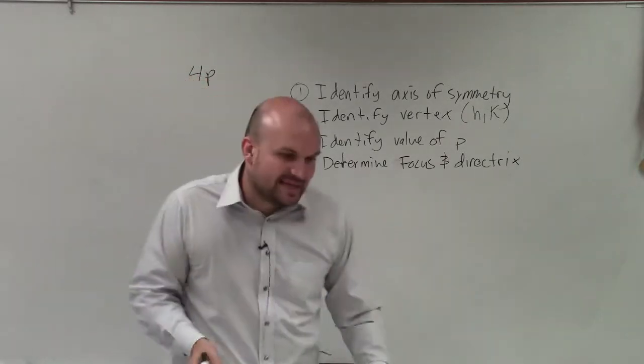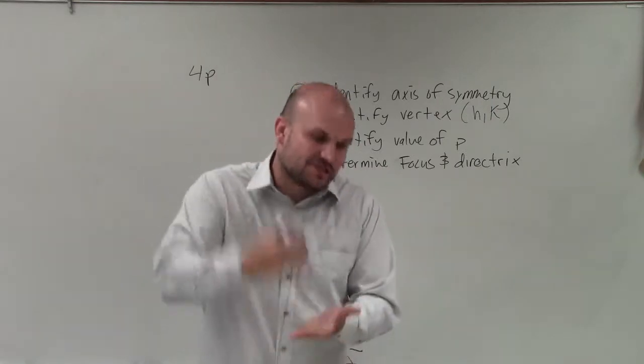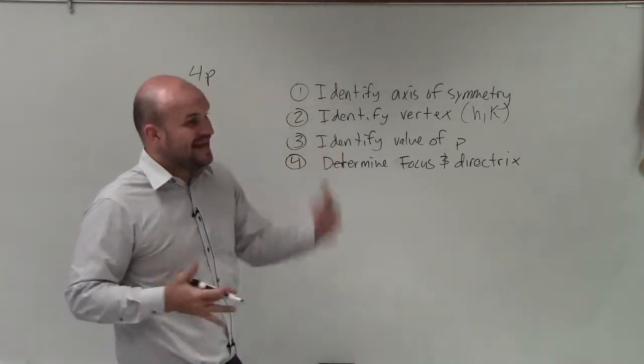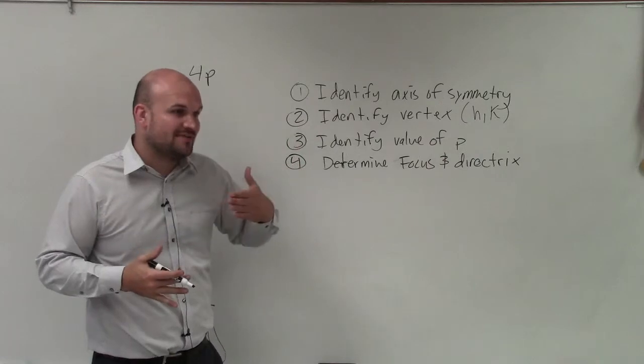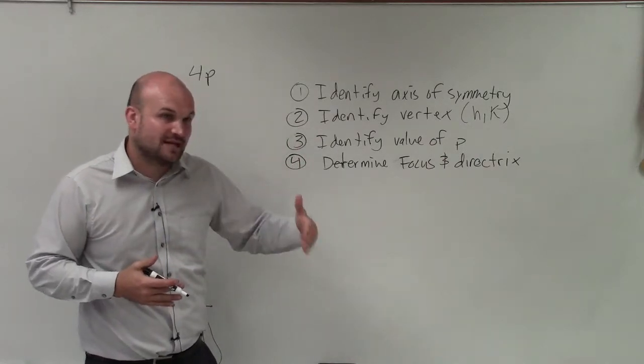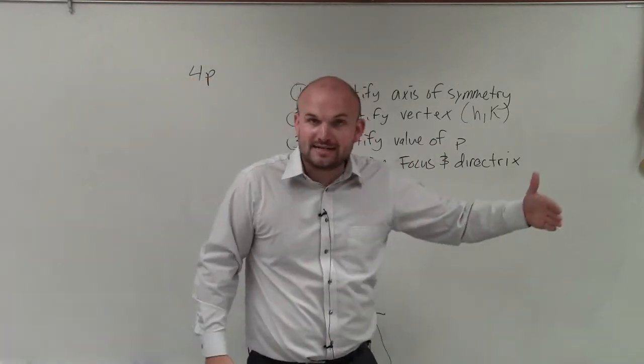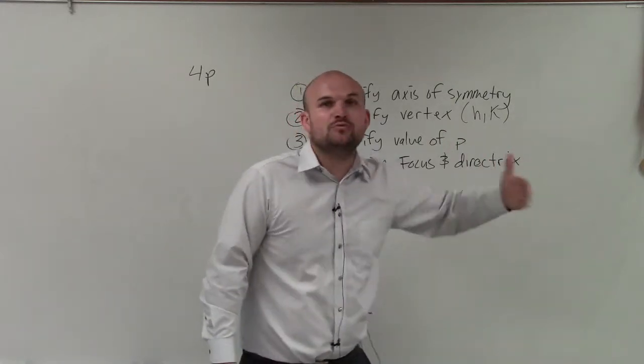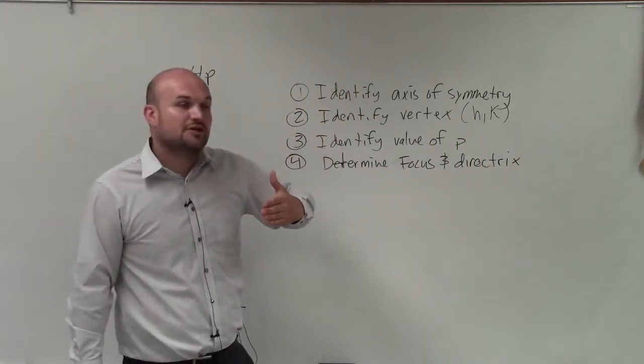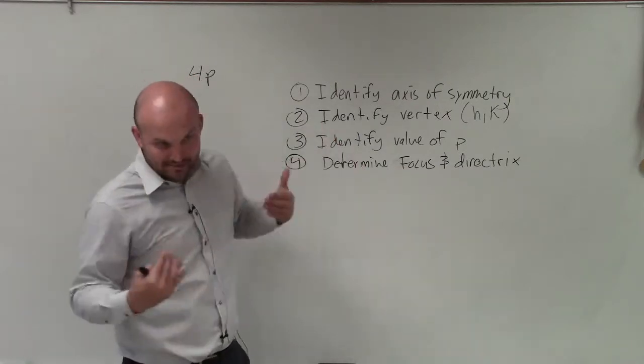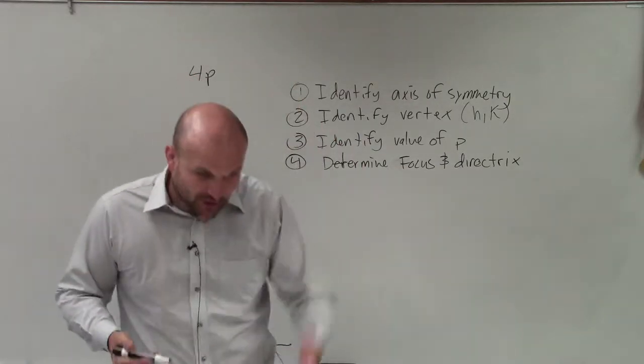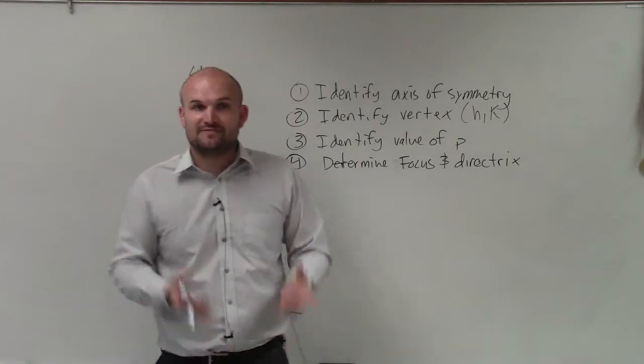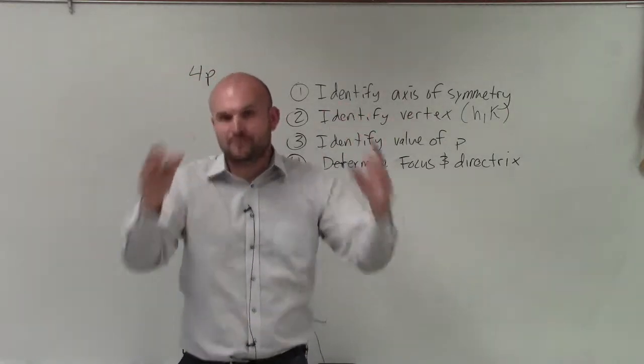And remember, the value of p is the distance from the center to the focus. And if that distance is positive and you have a horizontal axis of symmetry, then you're going to move to your right, and that means the graph opens up to the right. If p is negative, then you move to the left, and that means your parabola opens up to the left. If you have a vertical axis of symmetry and p is positive, then the parabola opens up. If it's negative, the parabola opens down.